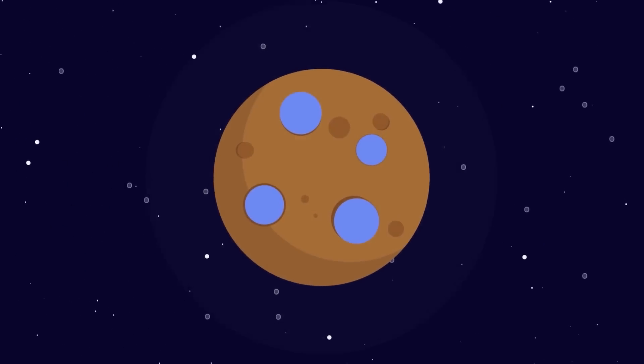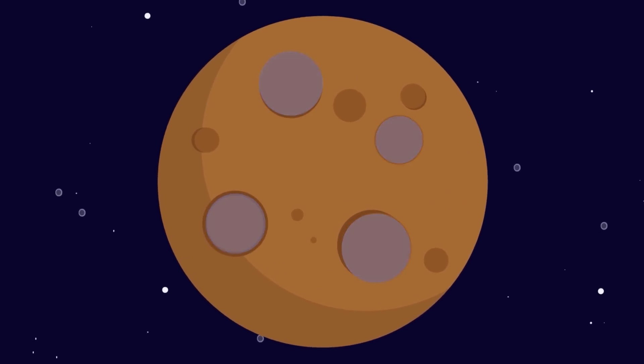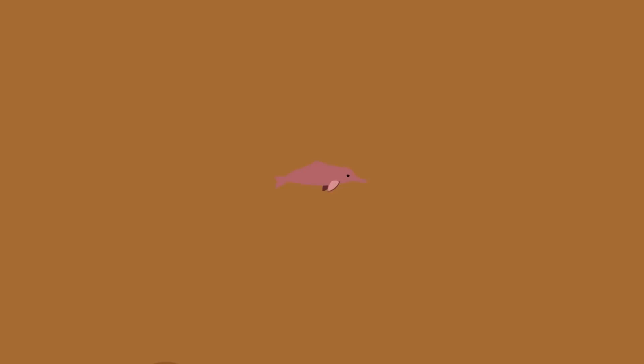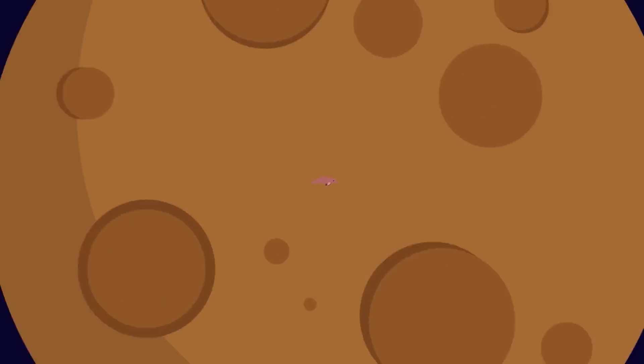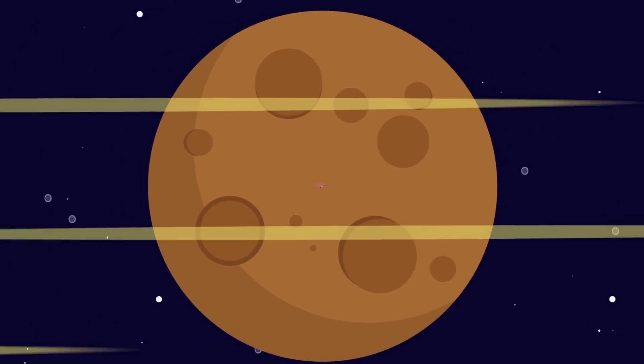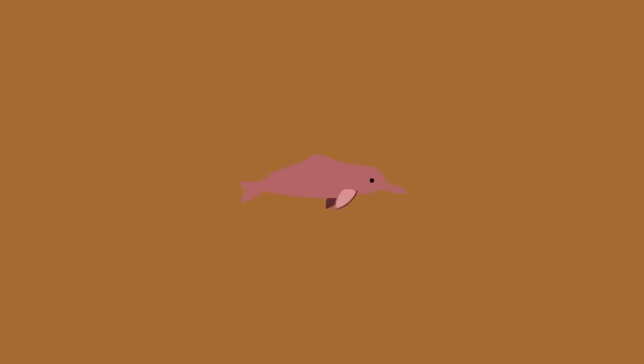With a weakening magnetic field, the solar wind sandblasted Mars' atmosphere away, and eventually its water. Any life, such as space-faring dolphins, would have been bombarded by cosmic and solar radiation, their DNA destroyed by the high-energy particles ripping it to pieces.